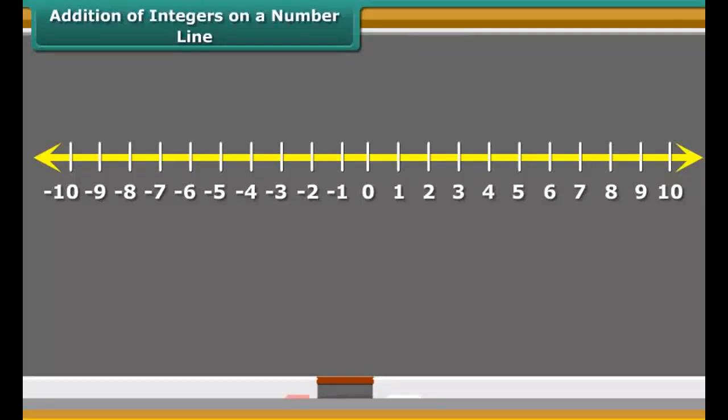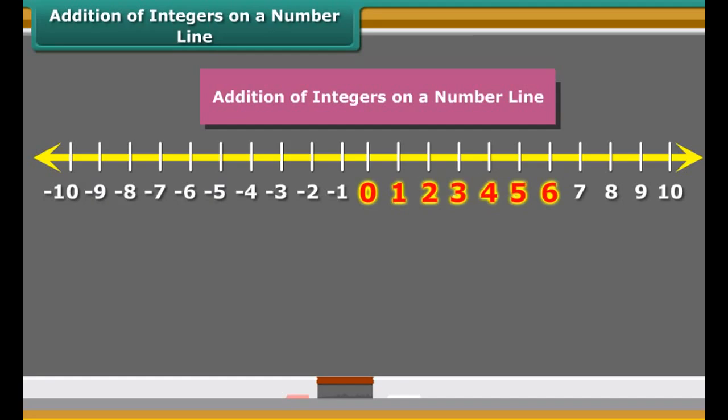Now we learn addition of two positive integers on a number line. If we add 6 and 4 on the number line, first we move six steps to the right from 0 reaching 6, and then we move four more steps to the right of 6 and reach 10. Thus we get 6 plus 4 equals 10.